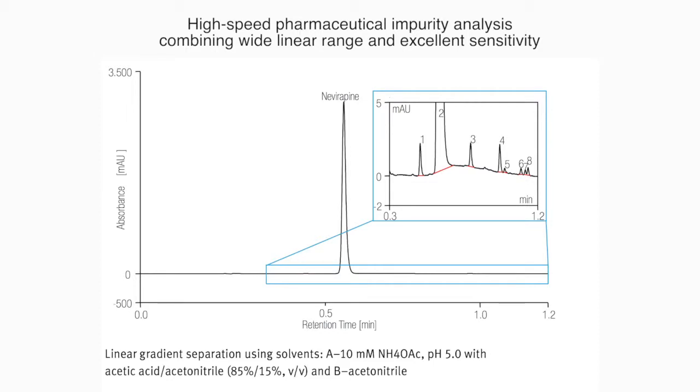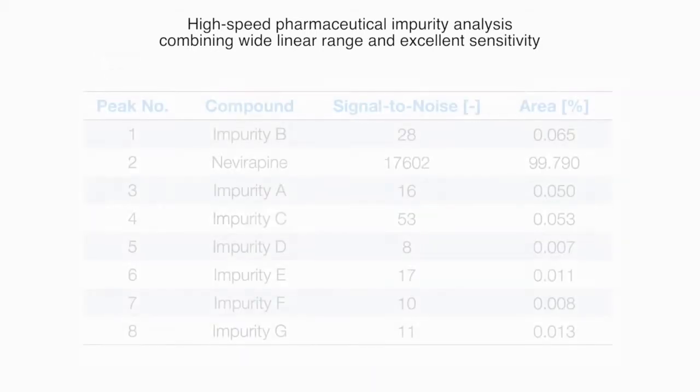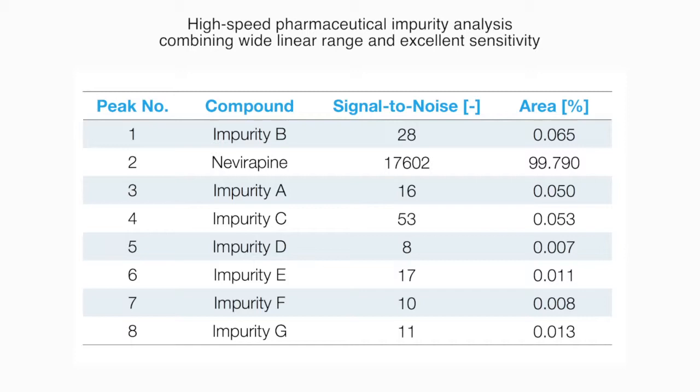allowing you to detect, for instance, compounds in impurity profiling experiments. And the wide linear range of up to 3 absorbance units will ensure that the main compounds are still detected accurately.